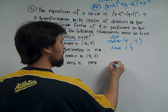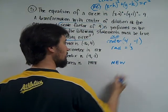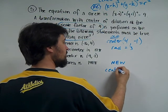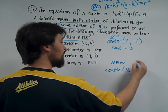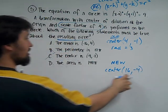So the new center is going to be times a factor of 4. 4 times 4 is 16, negative 1 times 4 is negative 4. So that's the actual center.